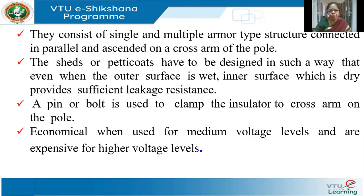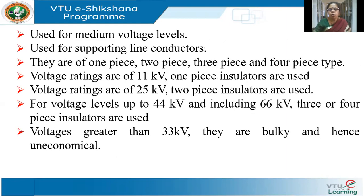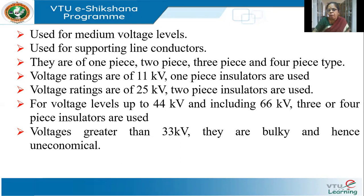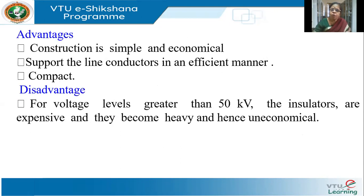Pin type insulators are economical for low voltages and become expensive as voltages increase. Normally, pin type insulators are used up to 33 kV. They can be of one piece, two piece, or four piece — different designs are available. For voltages greater than 33 kV, the pin type insulator becomes very bulky and is no longer economical. For voltages beyond 33 kV and up to 66 kV, you can use three or four pieces. The advantage is that it is simple, supports the line conductors efficiently, and is compact in size.